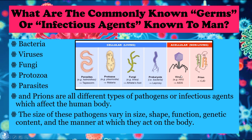We then have viruses, such as the HIV virus, which causes the disease AIDS. And then we have prions, which are also a type of infectious agent and go on to produce diseases such as Creutzfeldt-Jakob disease, for example.